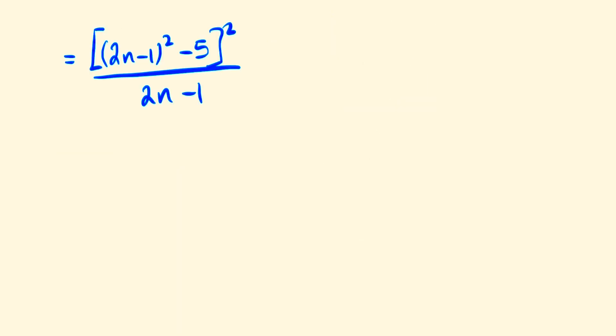Why is this useful to us? Well because if we say let a equal 2n minus 1 then we can now write this expression as a squared minus 5 all squared divided by a which is the same thing as a to the 4 minus 10a squared plus 25 and since all of this is being divided by a we can divide the individual parts by a.